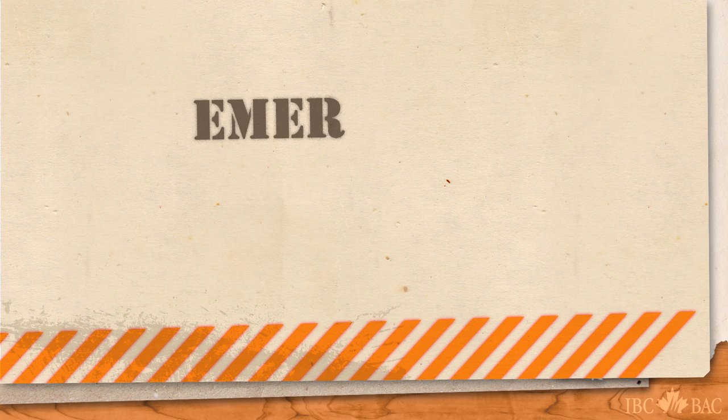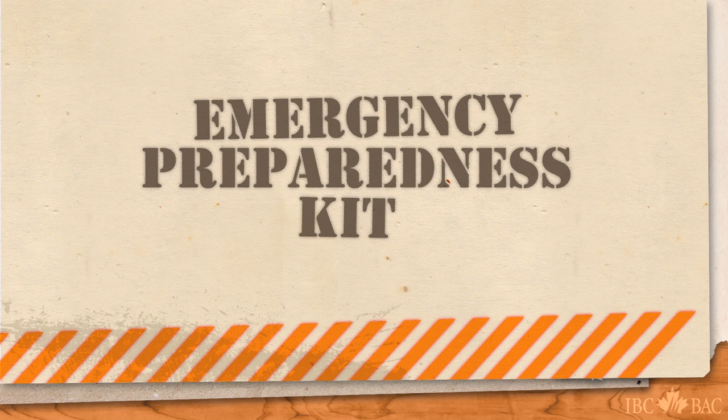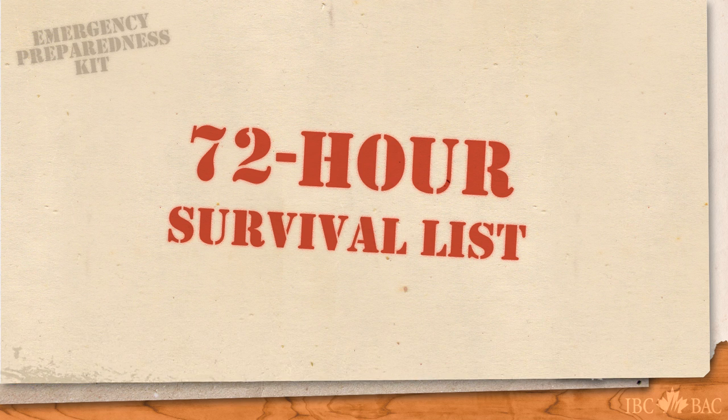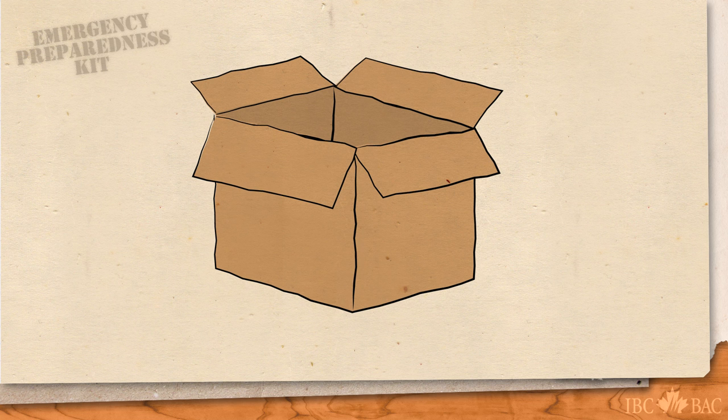Insurance Bureau of Canada urges you to put together an emergency preparedness kit. It should help you and your family get by without heat or electricity for at least 72 hours. It's simple and easy to assemble. Using a spare backpack, a duffel bag or a simple cardboard box, you can begin by packing it with these 10 basic items.